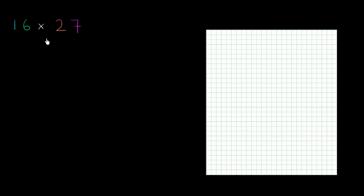So I'm going to multiply 16 times 27, and I'm going to do it using something called an area model. The whole point of an area model is to really understand what's going on in the multiplication process.